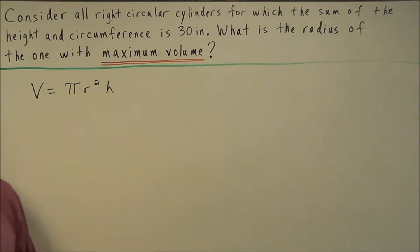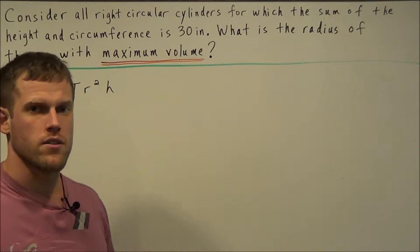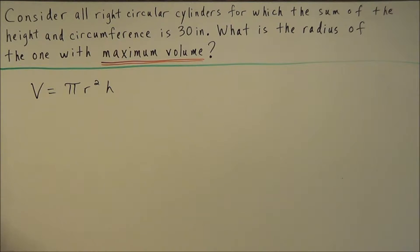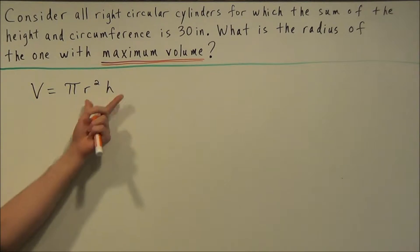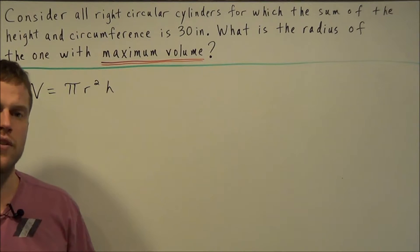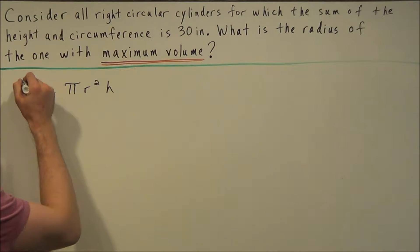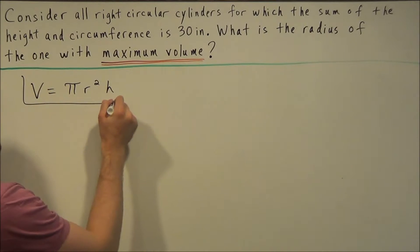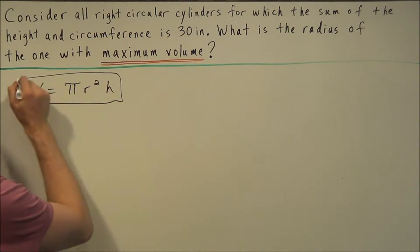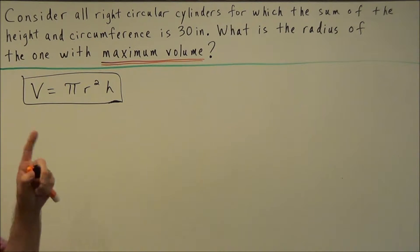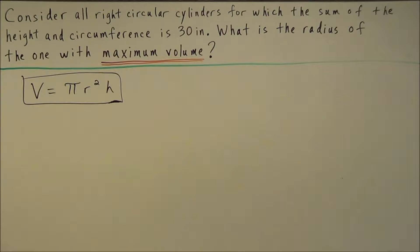In calculus, when you're looking for a maximum or minimum value you want to find a derivative, set it equal to zero, and find critical values. But notice this equation has two variables. So our next task is to take our primary equation and turn it into a function with one variable. This is where the rest of the information comes in.